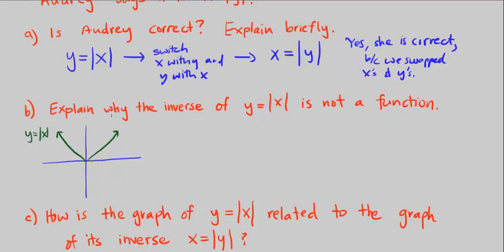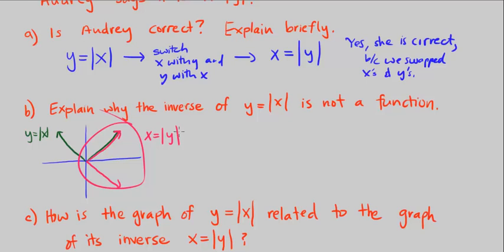This is the graph y is equal to the absolute value of x. If we go ahead and swap x and y, in pink here, this is the graph x is equal to the absolute value of y — the new relation. I'm specifically not calling it a function. If we look at a vertical line, there are multiple y values for a single x value. The vertical line test fails at all values greater than zero.